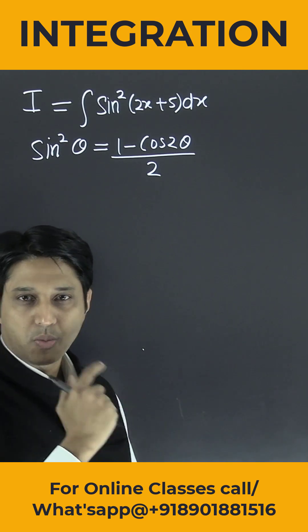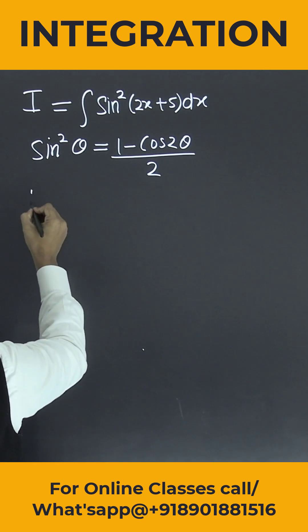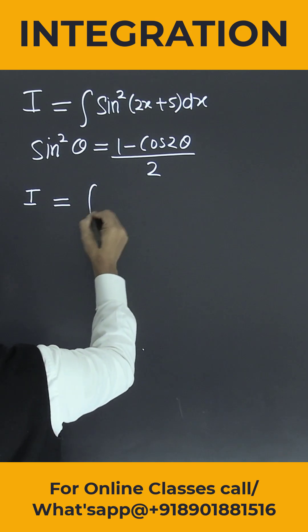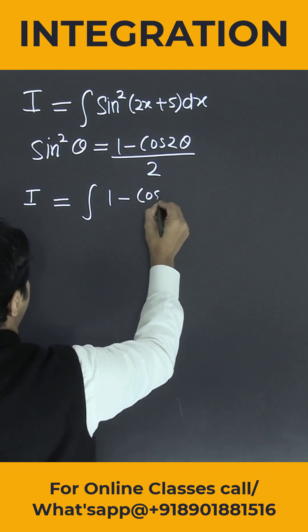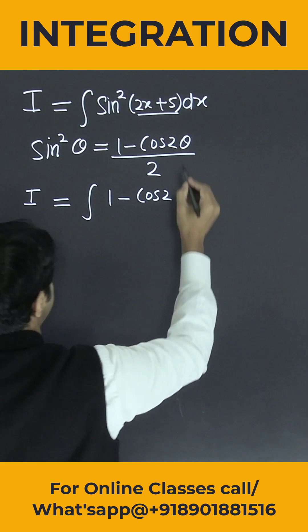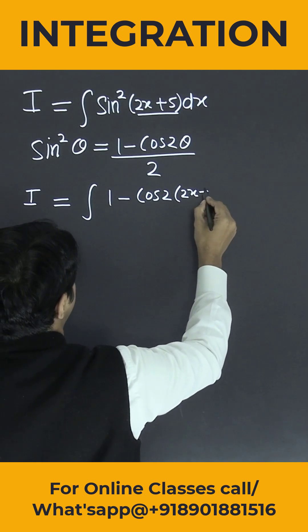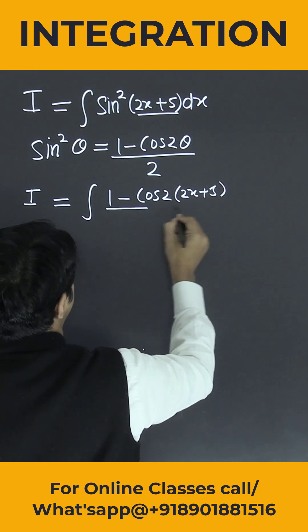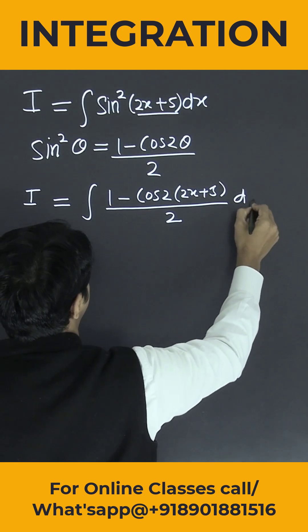Now I'm going to use this formula here. So can I say capital I is equal to integration of 1 minus cos 2 times 2x plus 5, divided by 2 into dx.